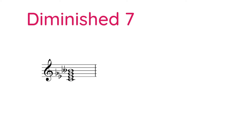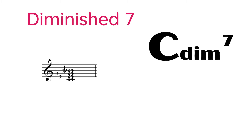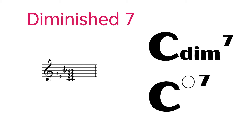Next we have the fully diminished seventh chord. This is a symmetrical chord where each note is separated by a minor third. The symbol for this chord has two options: Cdim7, or C with the degree sign and seven. Like the half diminished chord, the degree sign version will most likely be seen in handwritten or more old school notation. So 90% of the time, prepare to see Cdim7.